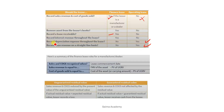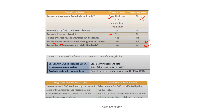For Operating Lease only: the asset remains in your balance sheet. We record depreciation expense throughout the lease — yes for Operating, no for Finance, we do not depreciate in Finance Lease. We record lease revenue on a straight-line basis — yes for Operating, no for Finance. I hope these concepts are now clearer.